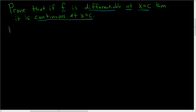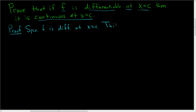Proof. We'll start by assuming that we have differentiability at c. So suppose f is differentiable at x equals c. This means we have a certain limit that exists.